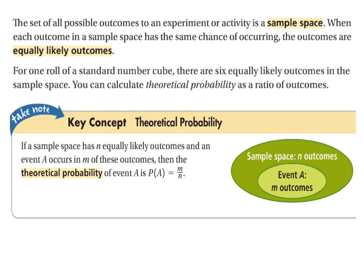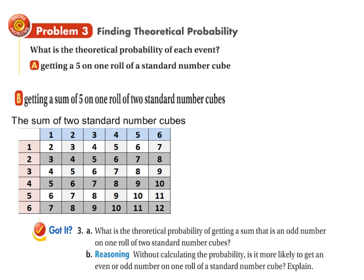In those cases, we can use theoretical probability as a ratio of outcomes. The theoretical probability of event A happening, if that happens M different ways and there's N total outcomes, is just M over N. An example would be getting a five on one roll of a standard number cube. Rolling that six-sided die one time, what's the probability of getting a five? There's one favorable outcome and six total outcomes. So probability for that event would be one-sixth, which is about 16.7% if we round it.